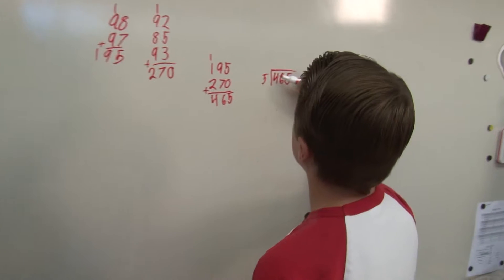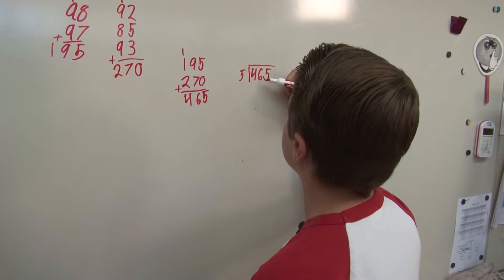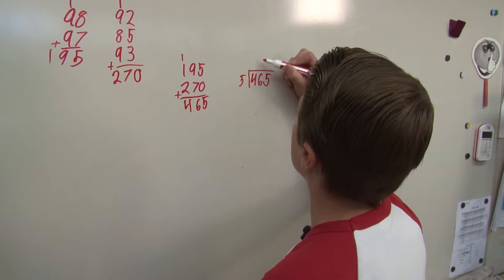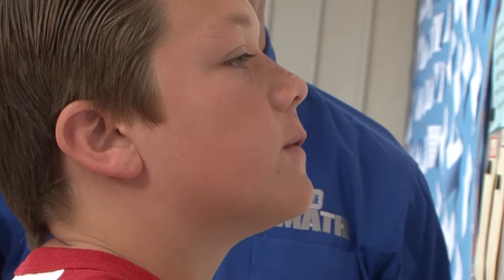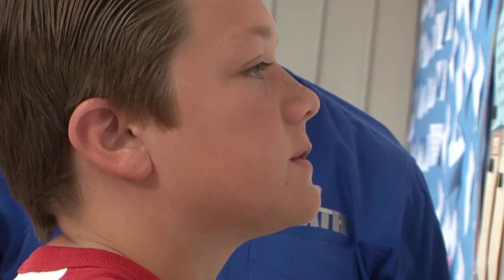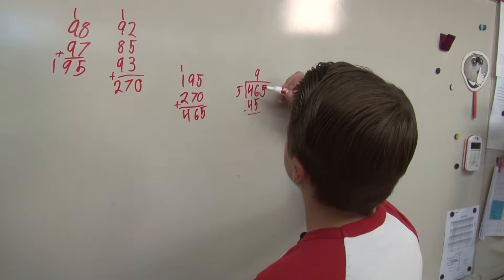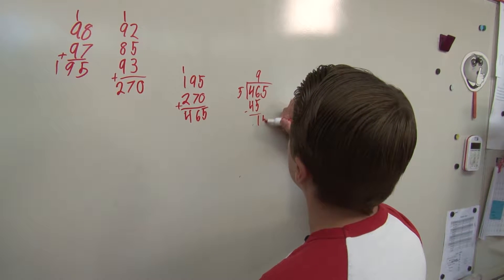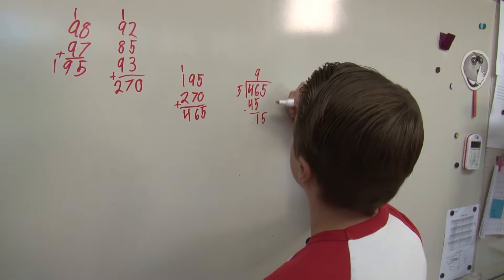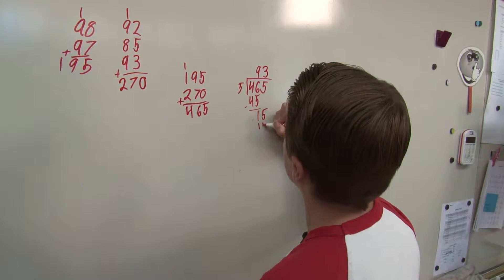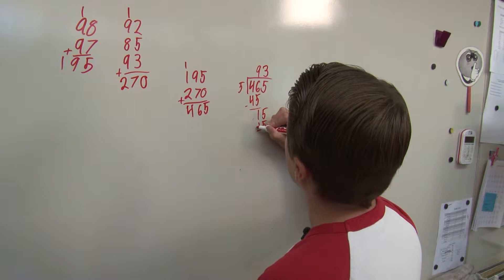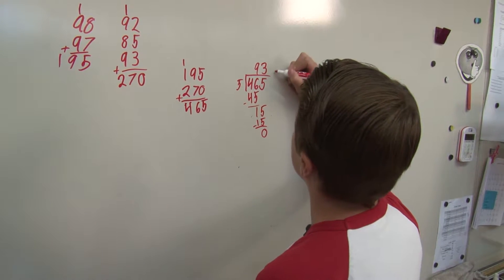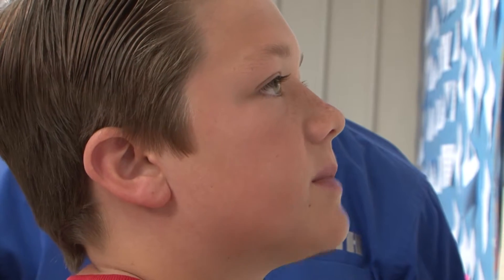5 can't go into 4, so 5 goes into 46 nine times, which would be 45. 9 times 5 is 45. Subtract would be 15. But you have to bring down the 5. Okay. And then 5 goes into 15 three times, which would be 15. Subtract that 0, so there is no remainder. 93 is my average.